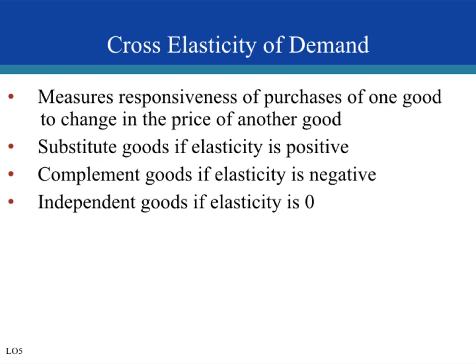A quick summary of cross-elasticity of demand: if elasticity is positive, the goods are substitutes; if it's negative, the goods are complementary; and if it's zero, the goods are independent — they have no relationship with each other, being neither complements nor substitutes.